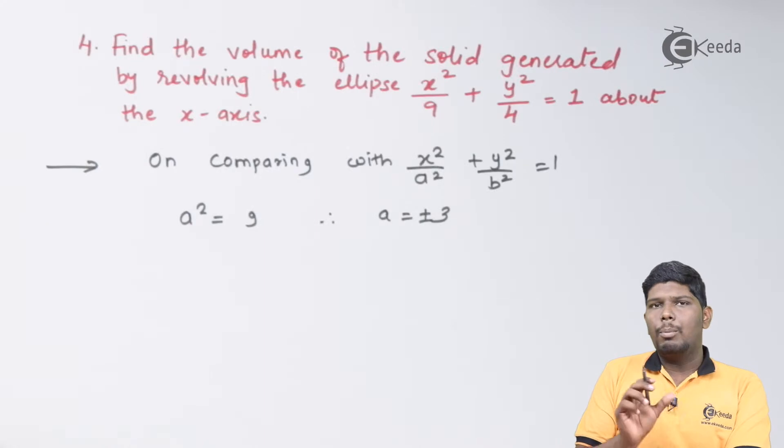a is nothing but the intercept formed on the x-axis. So we have minus 3 to plus 3. This will be the limits of x.